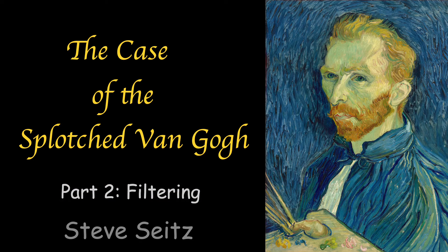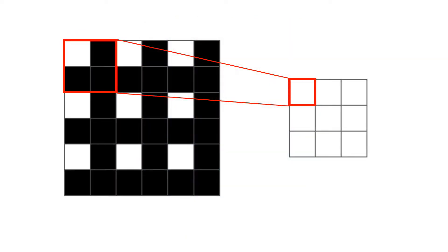Welcome back to part two of our Van Gogh mystery. Today we're going to learn about image filtering. Last time we saw that removing rows and columns can create noisy images. So what's the right way to resize an image?